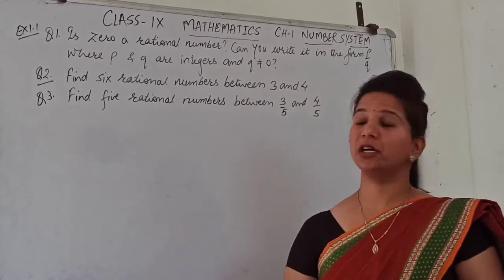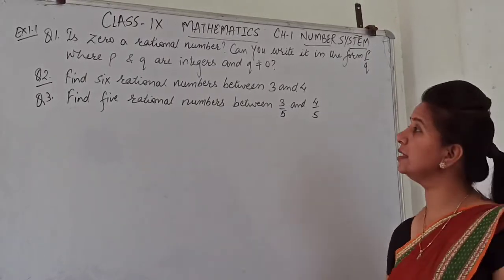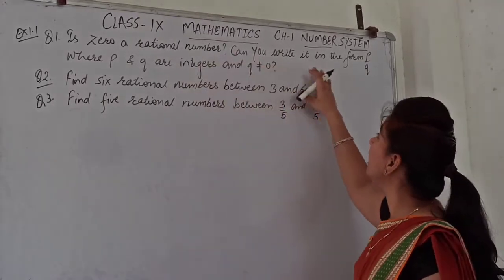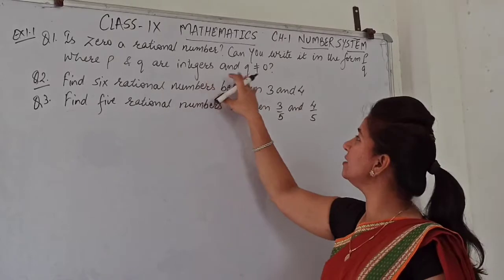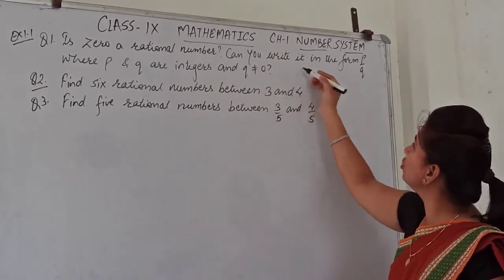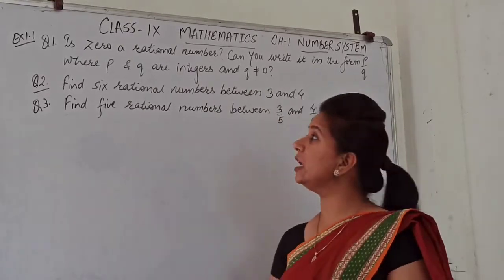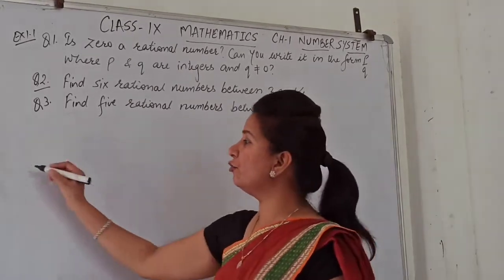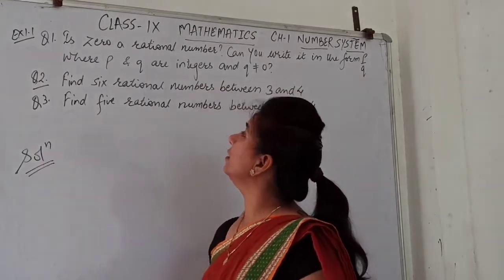Now we are moving to Exercise 1.1 and question number 1 is: Is zero a rational number? Can you write it in the form of P by Q, where P and Q are integers and Q is not equal to zero? So what is the definition of a rational number? We have to check if 0 is in the rational number category.